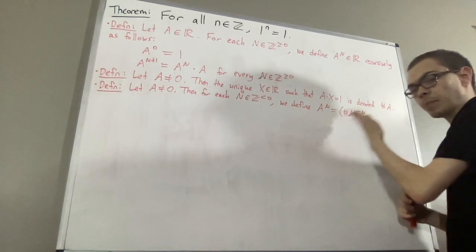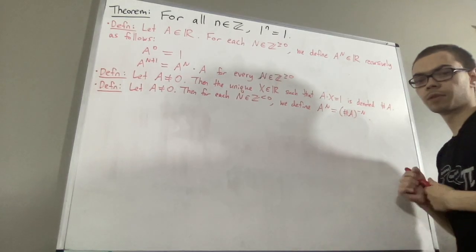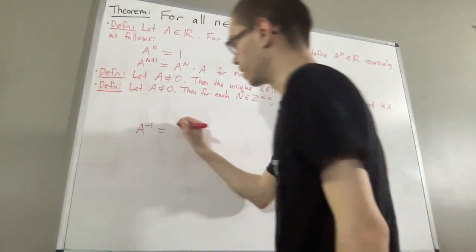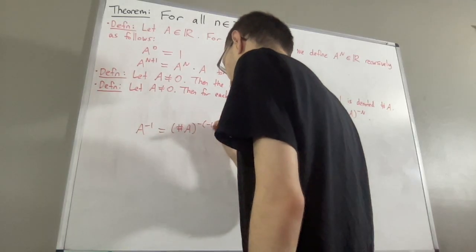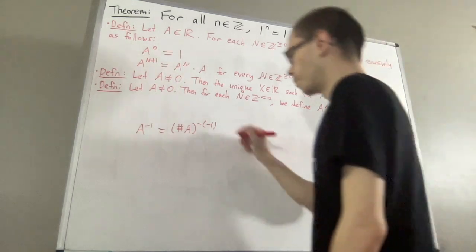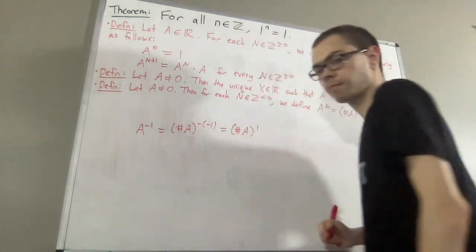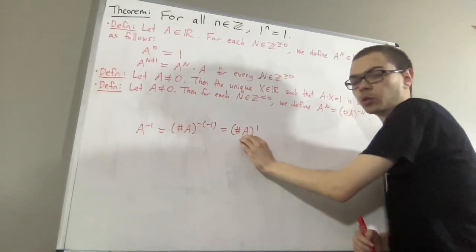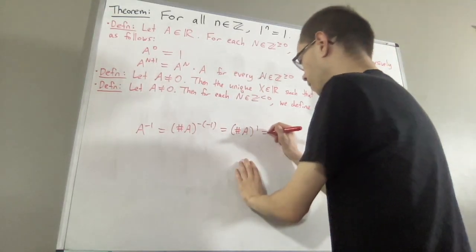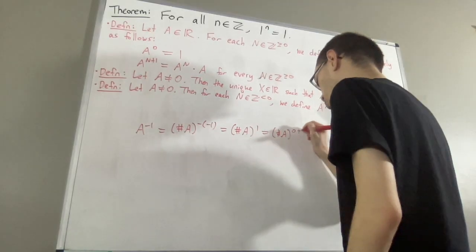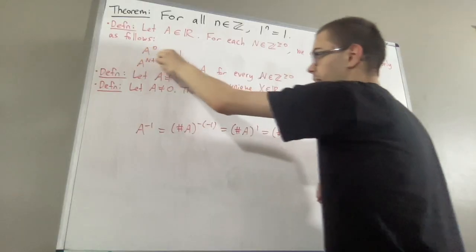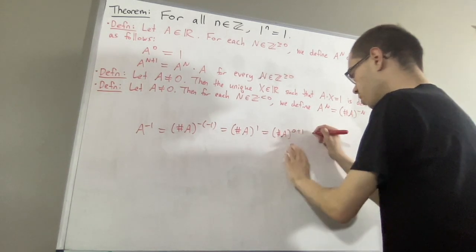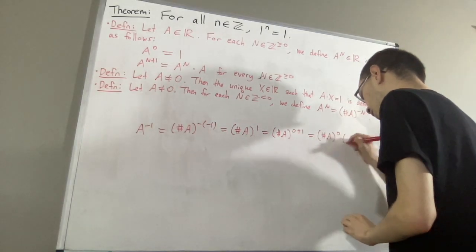From here, we can show that the reciprocal of a is equal to a with an integer exponent of negative 1. According to the definition, a with an integer exponent of negative 1 is equal to the reciprocal of a to the power of negative of negative 1. But then, the negative of negative 1 is just 1. According to our definition for non-negative integer exponents, you could verify any real number to the power of 1 is equal to itself. We could view the exponent of 1 as 0 plus 1, so we're in a position to apply the second part of the definition, taking n to be 0. In that case, the reciprocal of a to the power of 0 plus 1 is just the reciprocal of a to the power of 0 times the reciprocal of a.